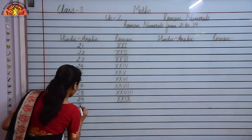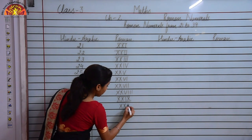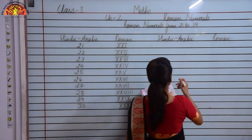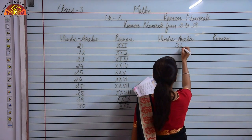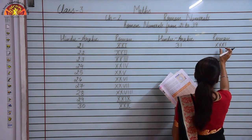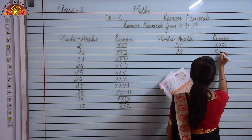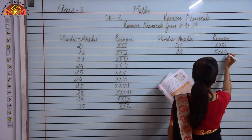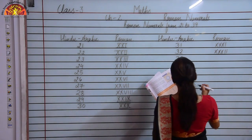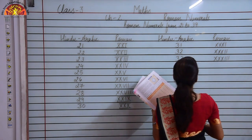Now to write 30 I will write the corresponding Roman numeral of 30 as XXX. To write 31 I will make use of XXX, so I will write XXX and then add I to it — this represents 31. Similarly to write 32 I will write XXX and then add II to it. And 30 plus 3 will be 33.